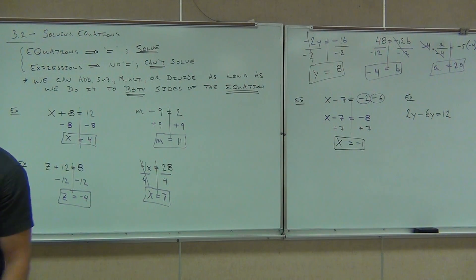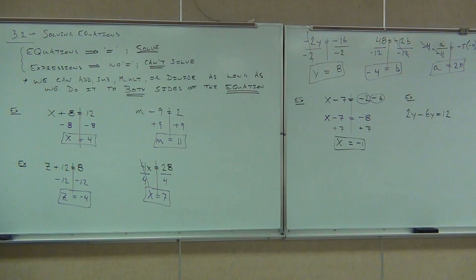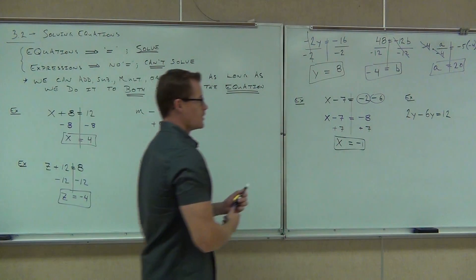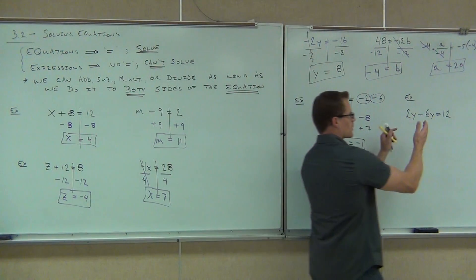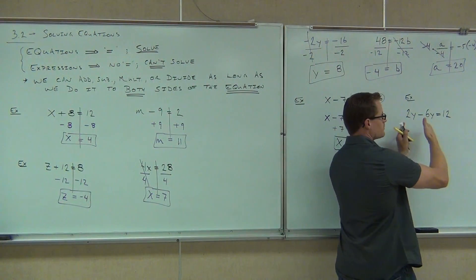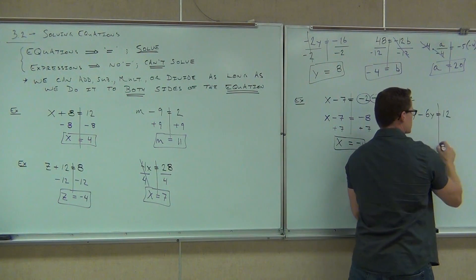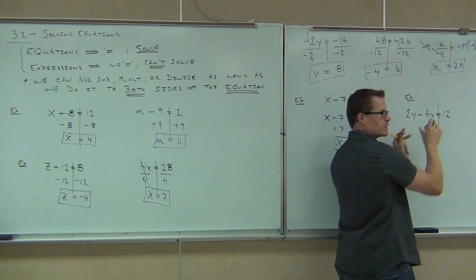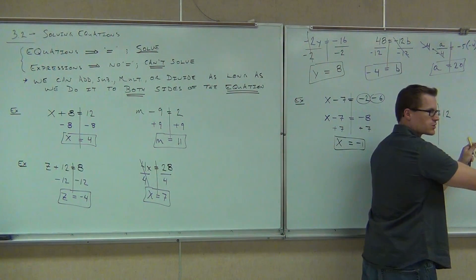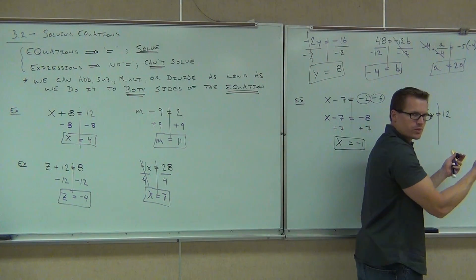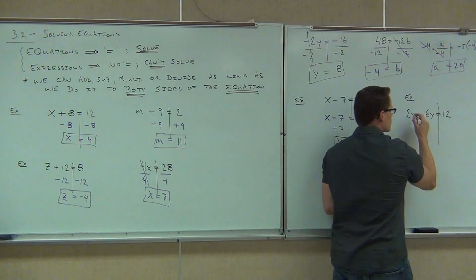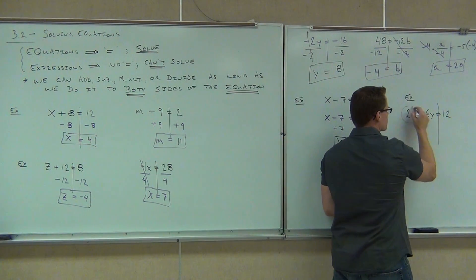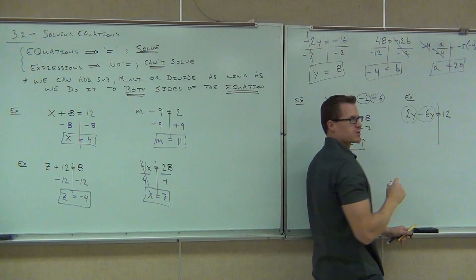Do I have any like terms? Yes. What are they? Like terms are side by side. So we look at the left-hand side of the like terms, and then we look at the right-hand side of the like terms. On the right-hand side, it's just the 12, so we don't have any like terms there, but we certainly have some like terms on the left.